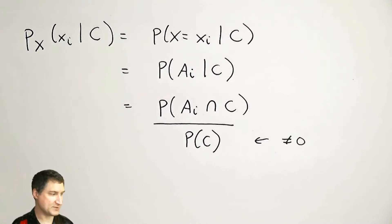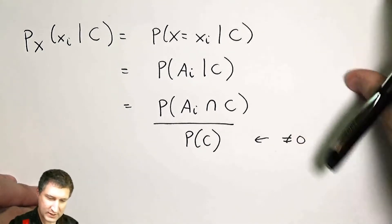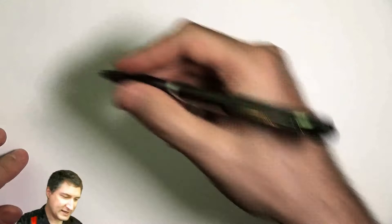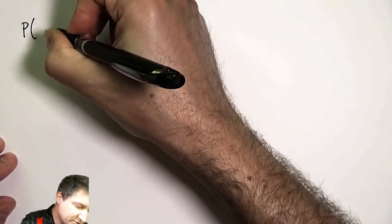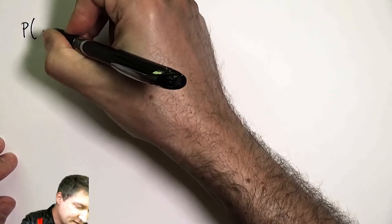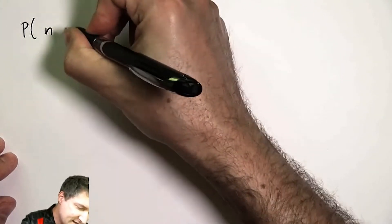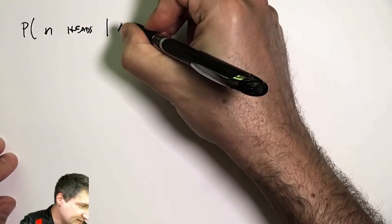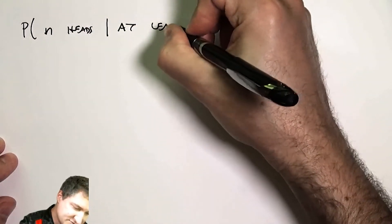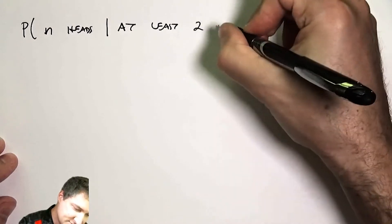So let's do a concrete example to make this more specific. Let's suppose I flip a coin five times, and I want to know what is the probability that I get n heads given that I already saw at least two heads.